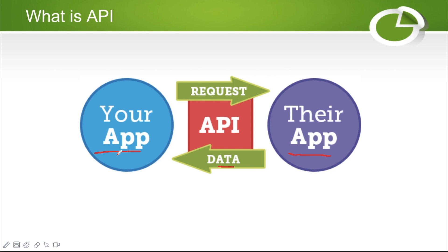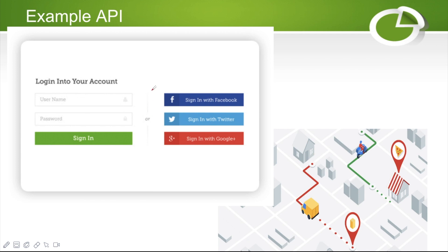Let's take another example. I'm building a website where I give users the option to sign in with Facebook, Twitter, or Google. For that I use the Facebook API, Twitter API, and Google API. I don't need to build a complete login page from scratch. Once the user clicks 'Sign in with Facebook,' a Facebook page opens. With just two lines of code, you can achieve that Facebook login functionality and get the complete data in your application.